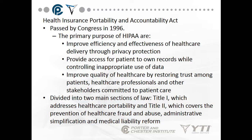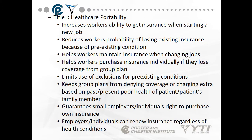Title I covers health care portability and administrative simplification and medical liability reform. It increases workers' ability to get insurance when starting a new job, reduces workers' probability of losing existing insurance because of pre-existing conditions, helps workers maintain insurance when changing jobs, and helps workers purchase insurance individually if they lose coverage from a group plan. It limits use of exclusions for pre-existing conditions, keeps group plans from denying coverage or charging extra based on past or present poor health of the patient or the patient's family members, and guarantees small employers and individuals the right to purchase and renew insurance regardless of health conditions.